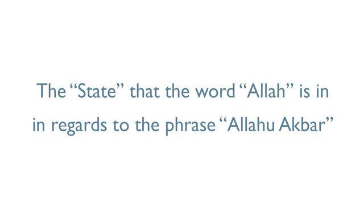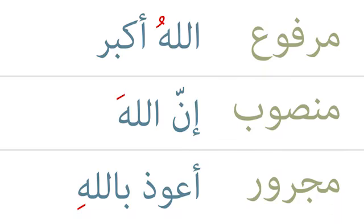Lastly, we want to analyze the state that the word Allah is in regards to the phrase Allahu Akbar. Because in Arabic, words are known to be in a particular state in relation to the role that they play in the sentence. When it comes to an ism, there are three different states: marfoo, mansub, and majroor.